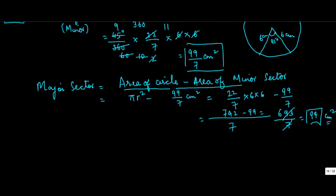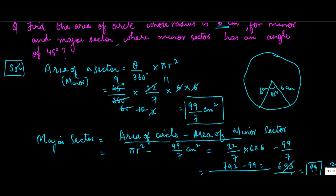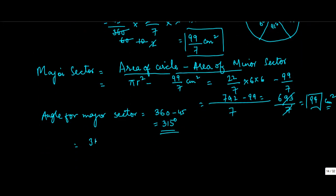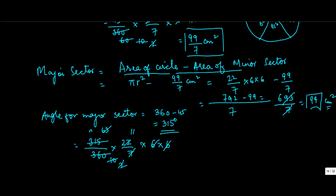The other way: you know the minor angle is 45 degrees, so the angle for the major sector is 360 minus 45, which is 315 degrees. Place this into the formula: 315 degrees upon 360 into 22 upon 7 into r squared. These cancel down — giving 9 into 11, which equals 99 cm squared. This is the same answer obtained from the first method.